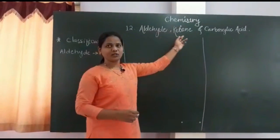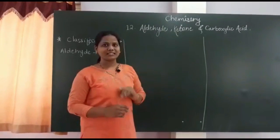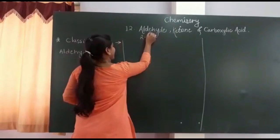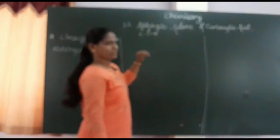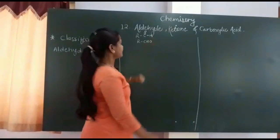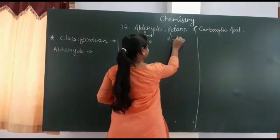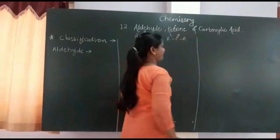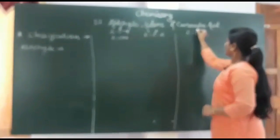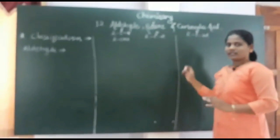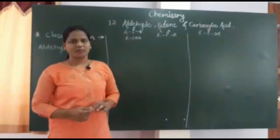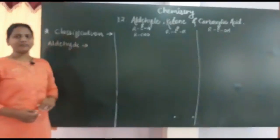Now for the classification of aldehyde, ketone, and carboxylic acid — a small piece of information on how they are generally represented. Aldehyde is generally represented as R–C double bond O–H, or also as R–CHO. Ketone is represented as R–C double bond O–R. Carboxylic acid is generally represented as R–C double bond O–OH. These are the general representations of aldehyde, ketone, and carboxylic acid.